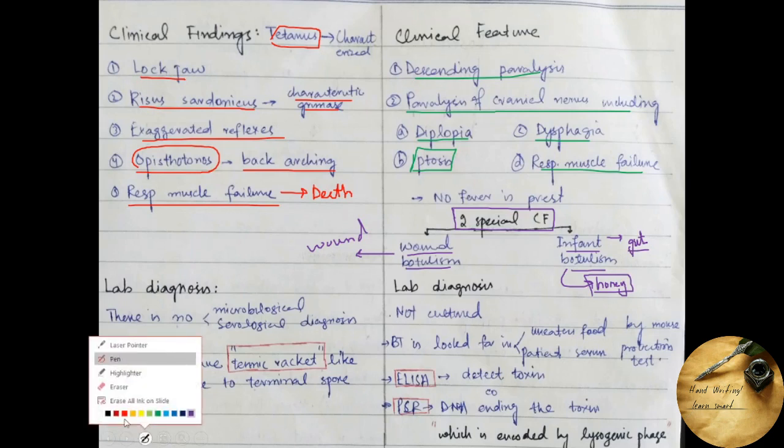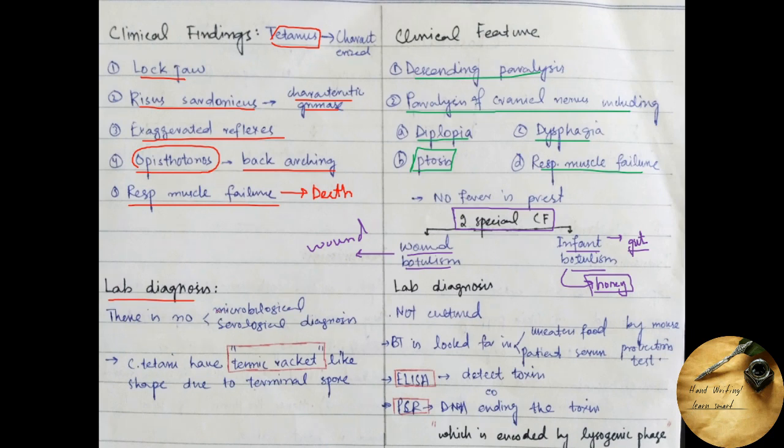Coming towards the laboratory diagnosis of Clostridium tetani, there are no microbiological or serological diagnosis. They can be diagnosed through microscopy in which the Clostridium tetani has tennis racket-like shape due to the terminal spores which you will see in the next slide.